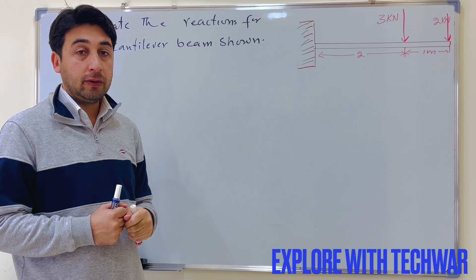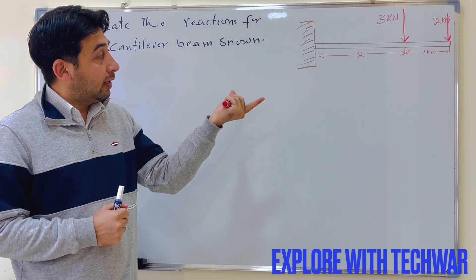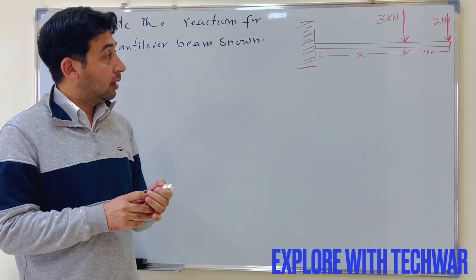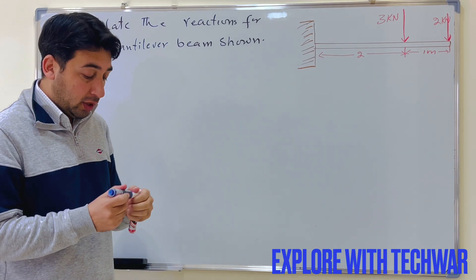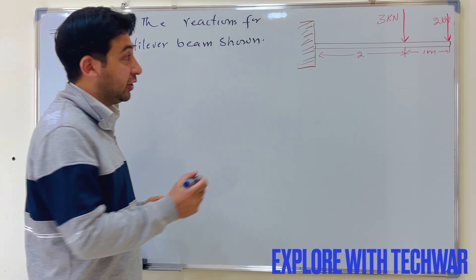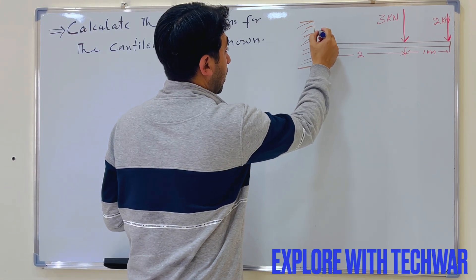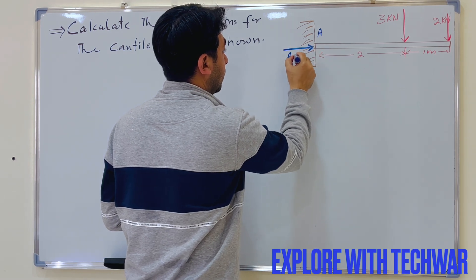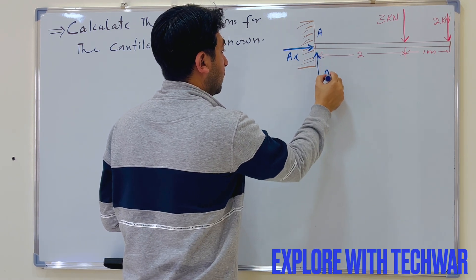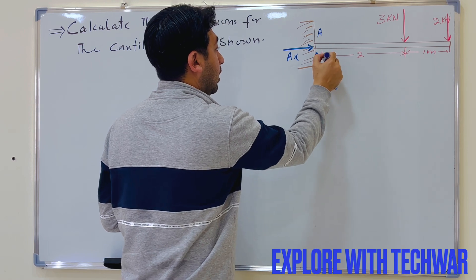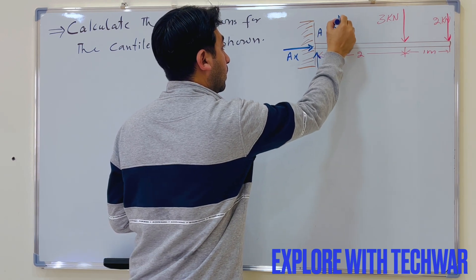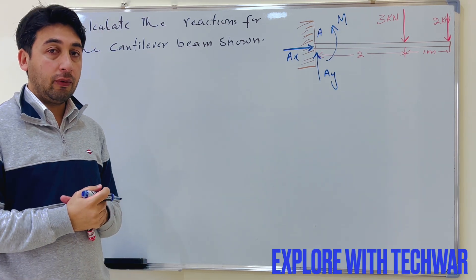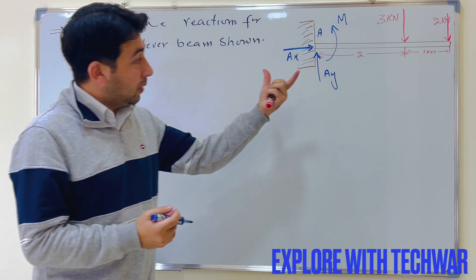Since it is a cantilever beam, we have a fixed support here. We will find the reaction on this fixed support. On a fixed support we have three reactions. Let's label this position A — so we have AX, we have AY, and we have a moment as a reaction here. We will find all three of these reactions.